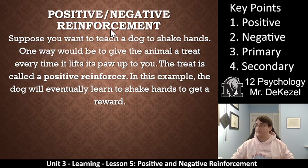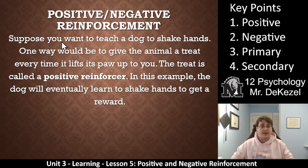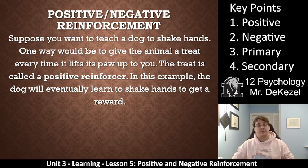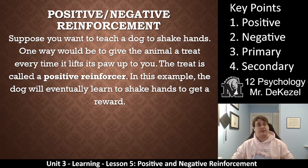So, positive and negative reinforcement. Suppose you want to teach a dog to shake hands. One way would be to give the animal a treat every time it lifts a paw up to you. The treat is a positive reinforcer — it's something that will increase the likelihood of the behavior. In this example, the dog will eventually learn to shake hands to get a reward.